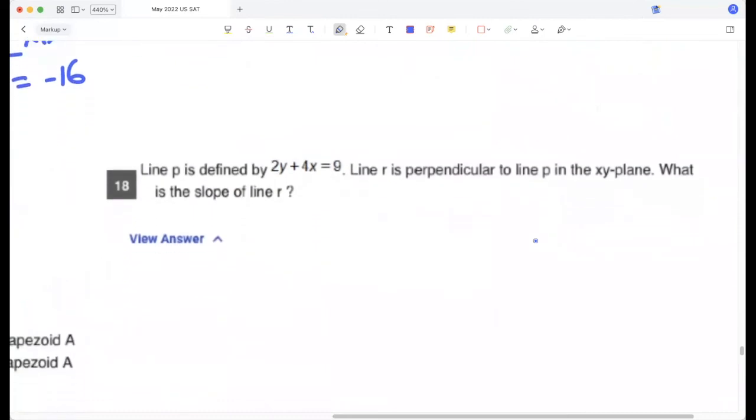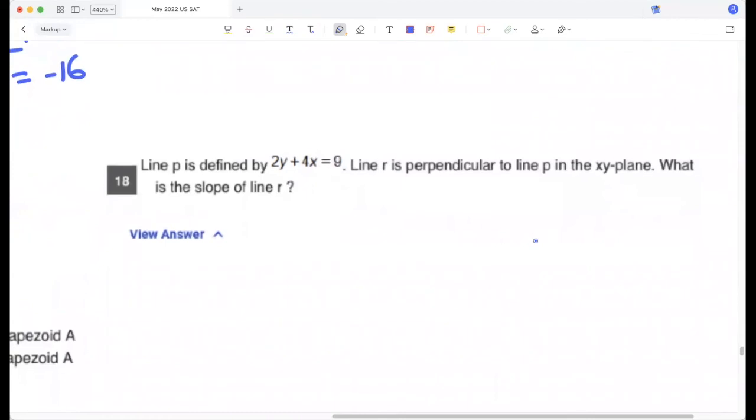Line p is defined by this. Line r is perpendicular to line p. What is the slope of line r? Okay, so p is 2y plus 4x is 9, so its slope is minus 4 by 2, so that's minus 2. So the slope of r will be half, negative reciprocal.